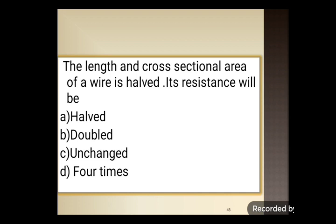Next question: the length and cross-sectional area of a wire are both halved. Its resistance will be — option A: half, option B: double, option C: unchanged, option D: four times. When both the length and cross-sectional area of the wire are halved, its resistance will be unchanged. Option C is correct.